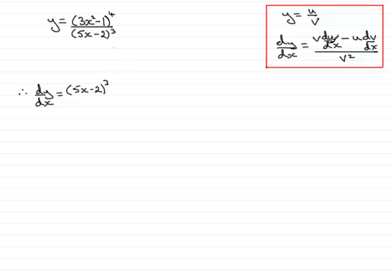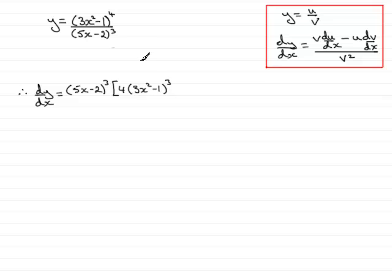Now we have to differentiate the top of the fraction, which requires the chain rule. On the assumption that you're okay at differentiating via the chain rule, inside a square bracket we get 4 times the bracket to the power 3, so 4 times (3x squared minus 1) all to the power 3, multiplied by the differential of the bracket. Differentiating inside the bracket gives 6x, so we put that in a bracket and close off the square bracket.